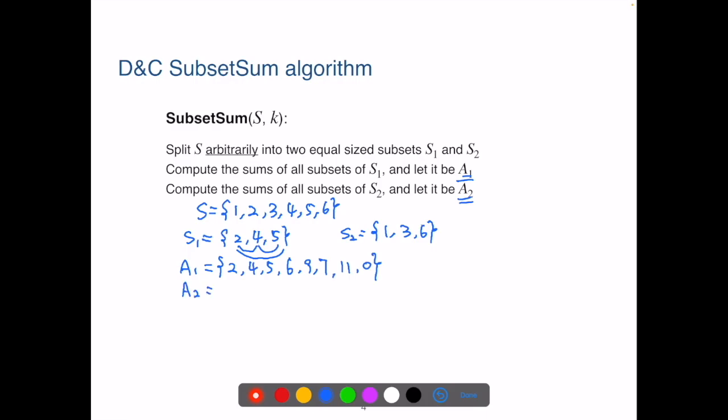We could have the same for A2. Try that on your own. The reason we're doing this is because either A1 has a value x and x equals k, or A2 has a value y, y equals k, or we have x from A1, y from A2, where x plus y equals k. We have 3 possible cases.